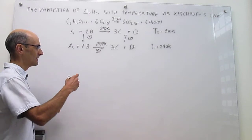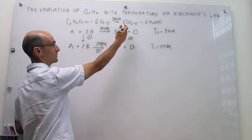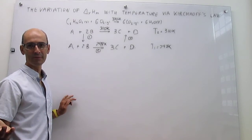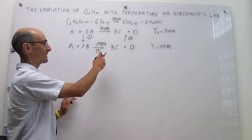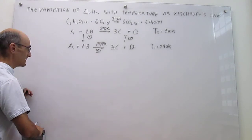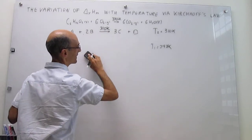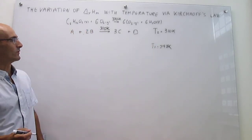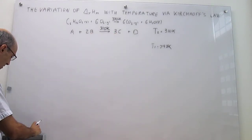Here's what Kirchhoff's law is. The goal is to take one reaction of your choice — could be the combustion of glucose or any generic reaction — and be able to determine the enthalpy of the reaction at a different temperature from where you have data. Data is generally provided at 298 Kelvin, and the goal is to determine it at, say, 310 Kelvin. We can label these T1 = 298 Kelvin and T2 = 310 Kelvin. Our goal is to determine the enthalpy of the reaction at T2.